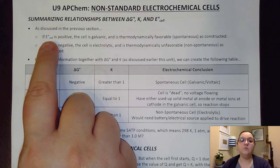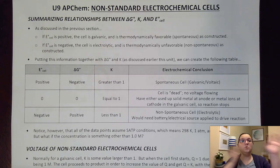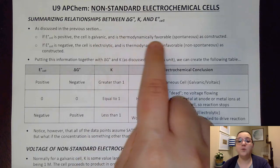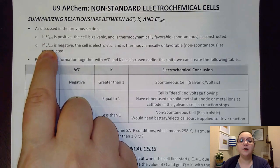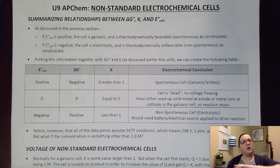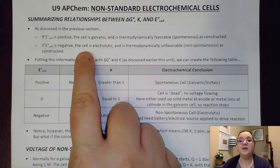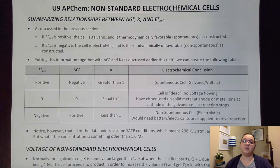The cell potential has a symbol of E with a subscript of cell. You'll often see the little degree symbol with it to represent SATP conditions, and the unit is volts. If that volt value comes out positive, then there is a drive to move electrons for the reaction in the direction written, so the cell would be considered galvanic and thermodynamically favorable. However, if our E cell value comes out negative, then we are not driven to move electrons in that direction — the opposite movement would actually be more favorable, and the cell would be electrolytic, as it is thermodynamically unfavorable in the direction written.